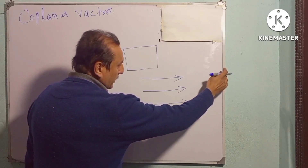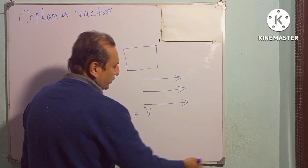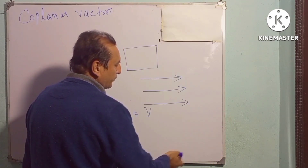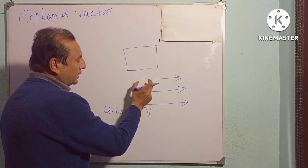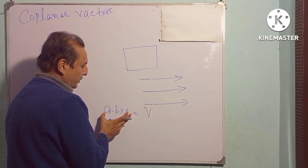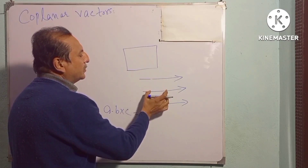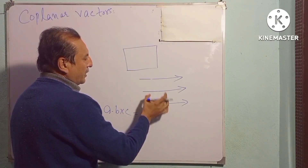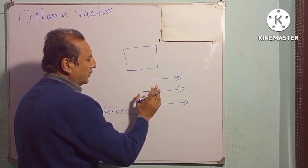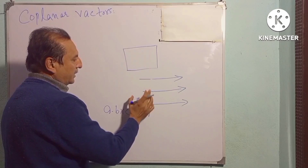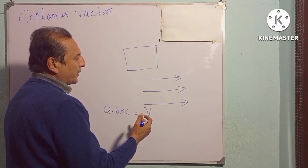کیونکہ دیکھیں، ایک axis ہے اور دوسرا axis ہے، اس کو جب multiply کریں تو area آئے گا۔ اگر تین vectors کا ہم triple product لیں اور اس سے zero آ جائے، تو اس کا مطلب ہے کہ یہ تینوں vectors coplanar ہیں۔